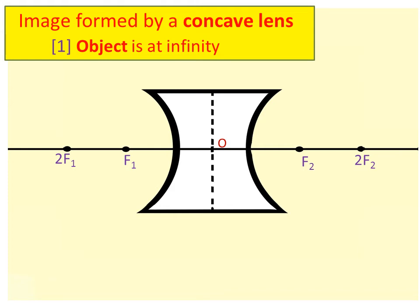Image formed by concave lens. This is our concave lens. O is the optical center and F1 and F2 are the principal focus. This is our principal axis.